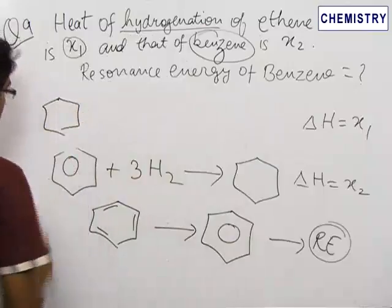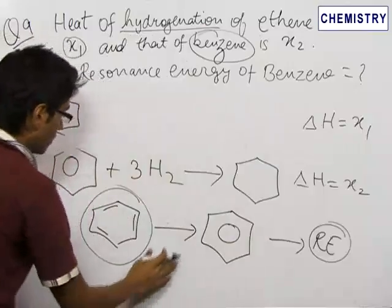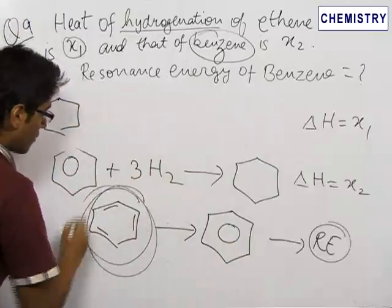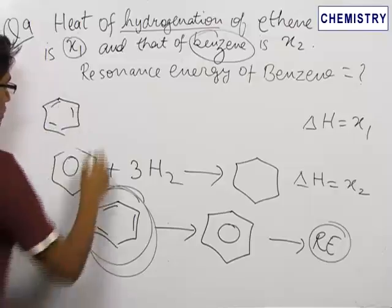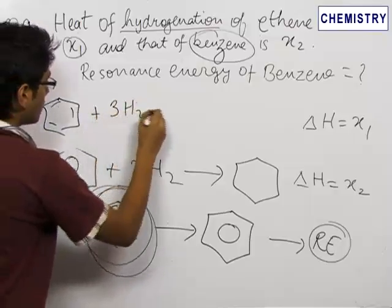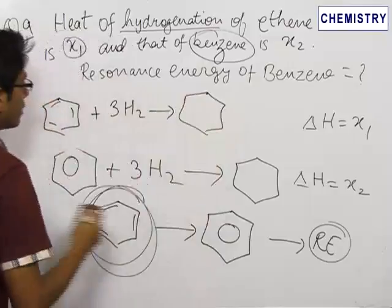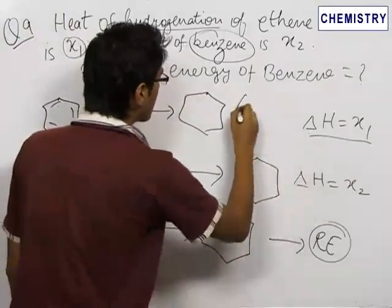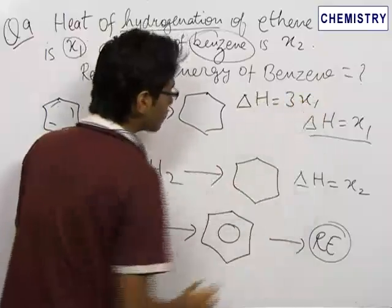Since non-resonating benzene is equivalent to three molecules of ethene — one molecule of ethene has one double bond and this is having three double bonds — this is equivalent to three molecules of ethene plus three hydrogen giving cyclohexane. Since the heat involved for ethene was x1, the enthalpy of this reaction will be equal to three times x1.